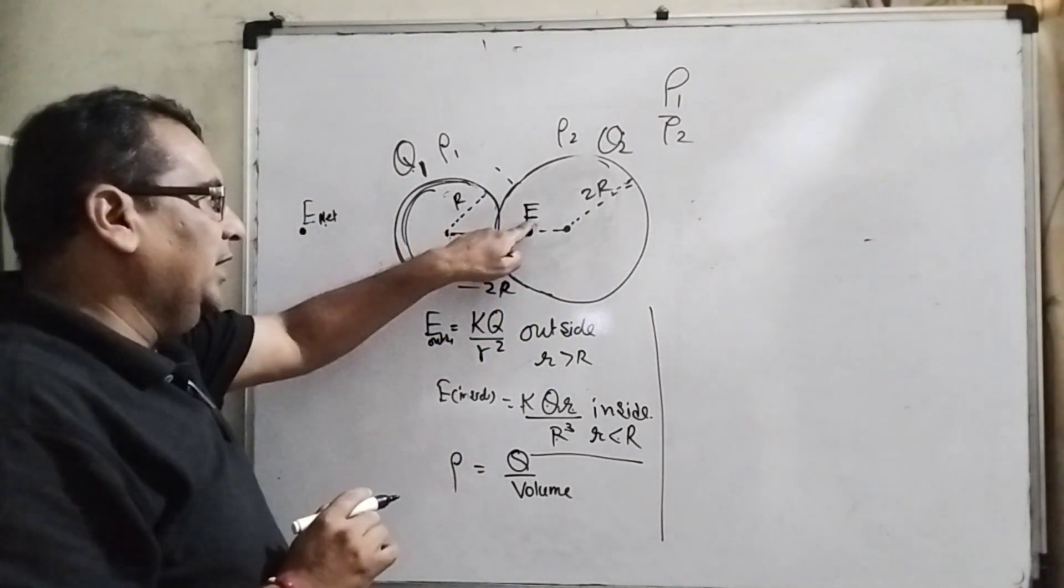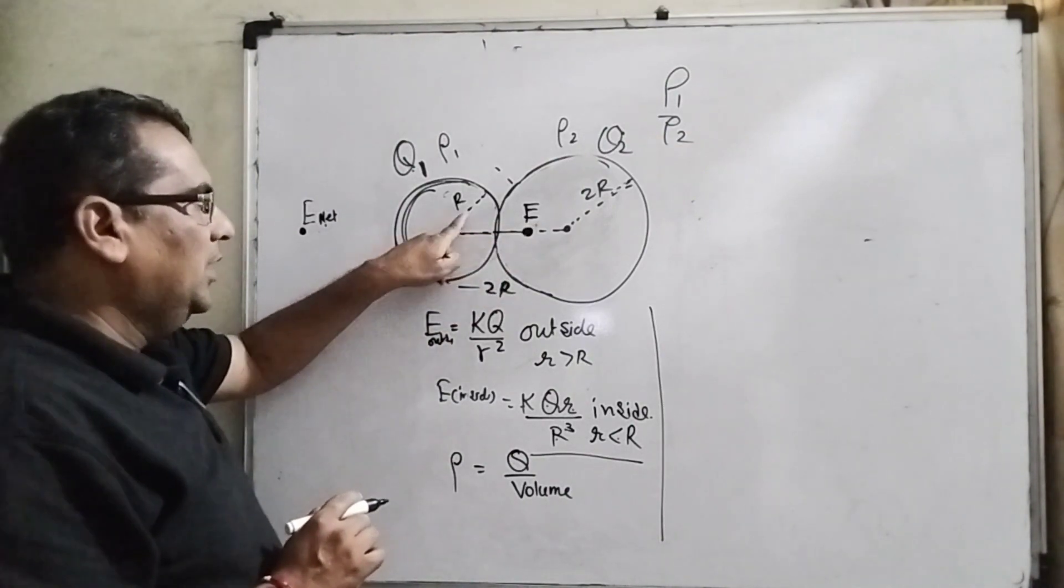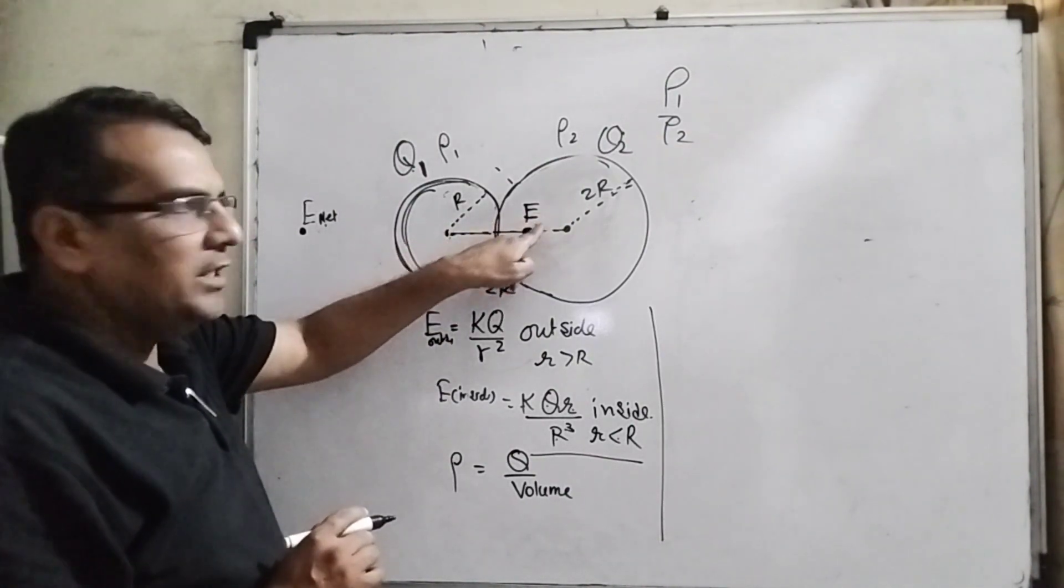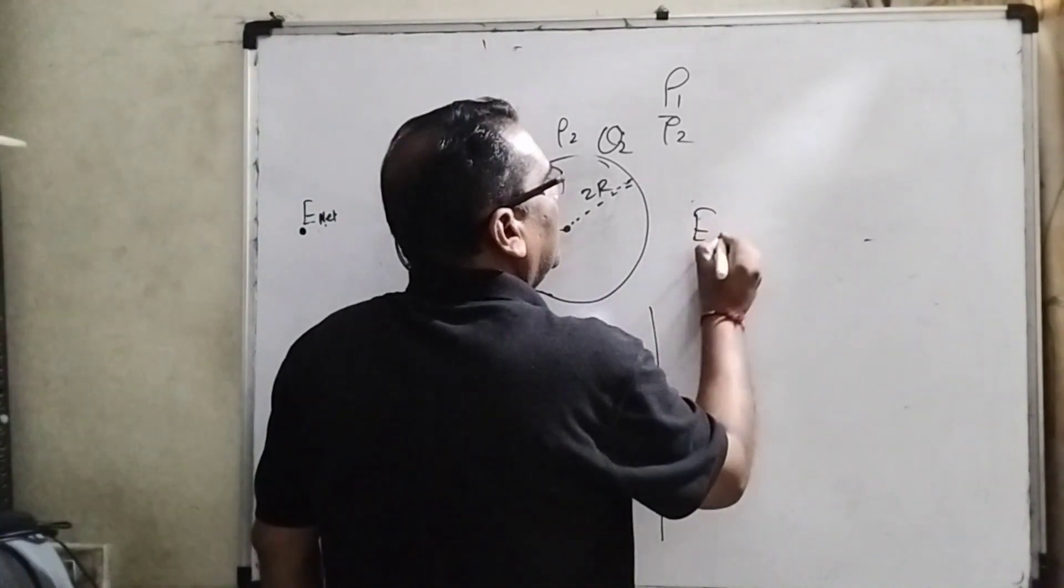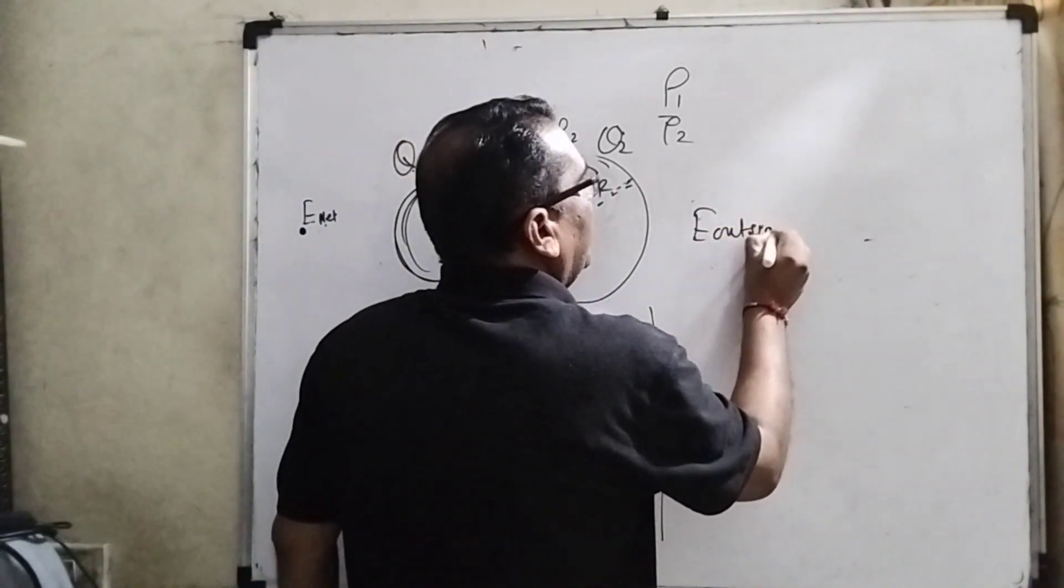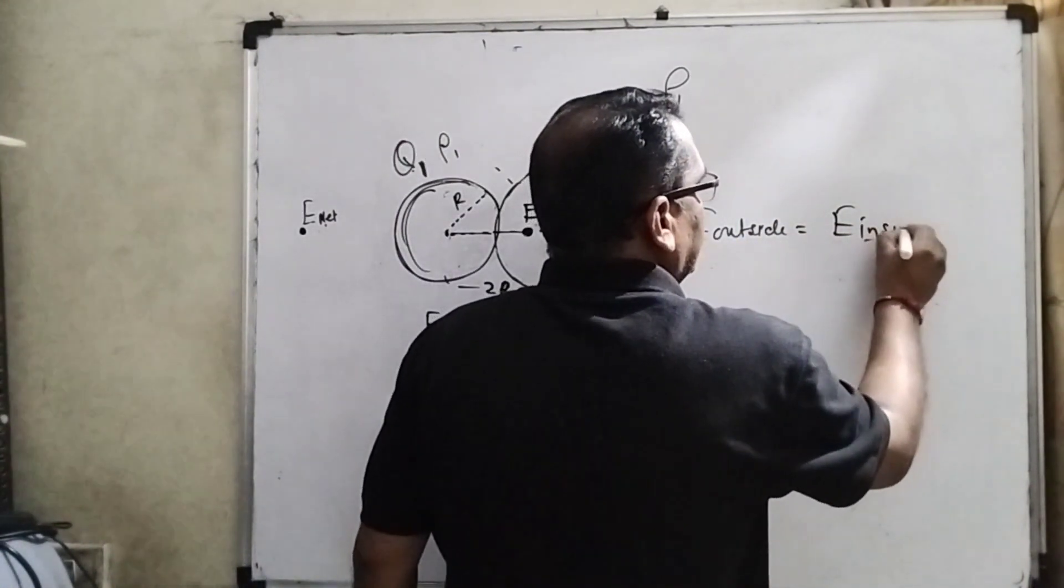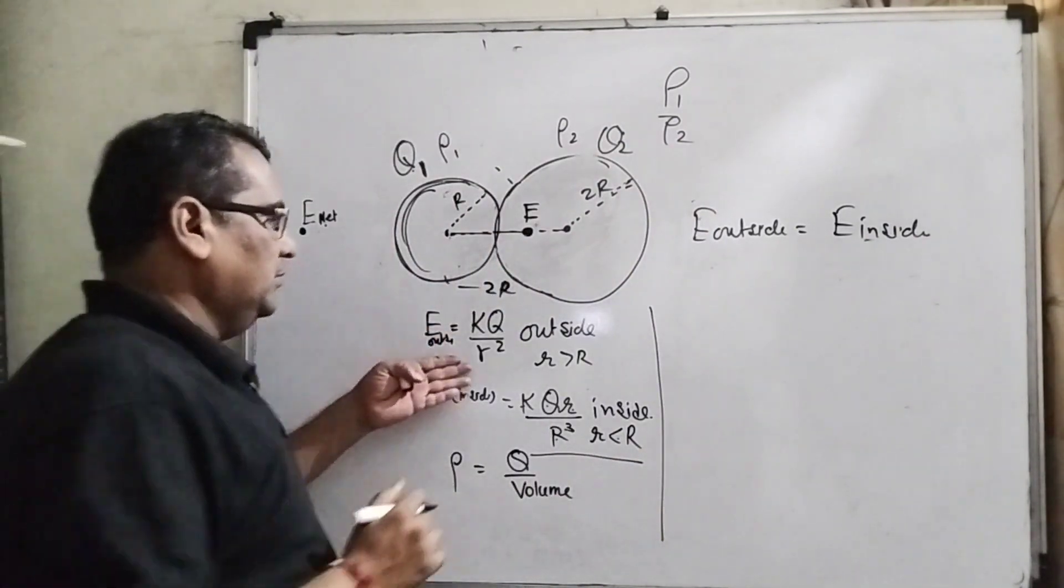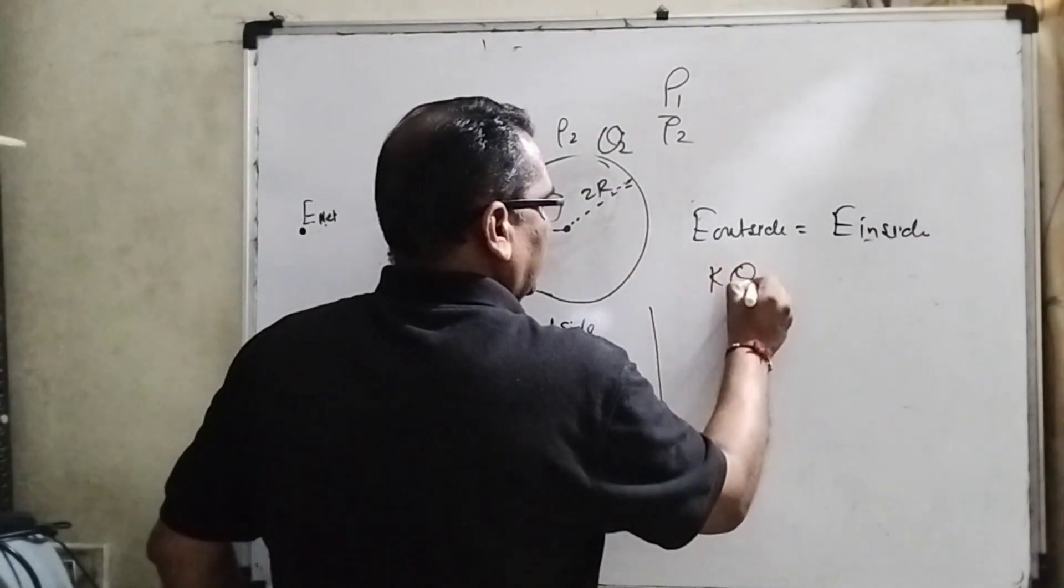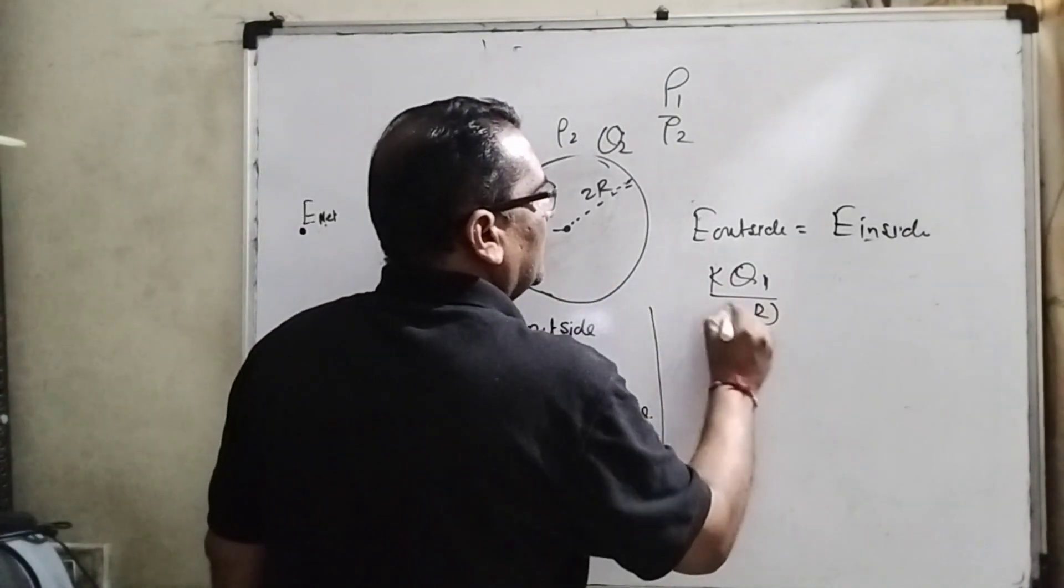This electric field is working for the outside for the smaller one, and this electric field is working for the inside for the larger. So here according to the question, electric field outside for the smaller is equal to electric field inside for the larger one. And what is the formula we have used? Then you can see that k q1 over distance 2r square.